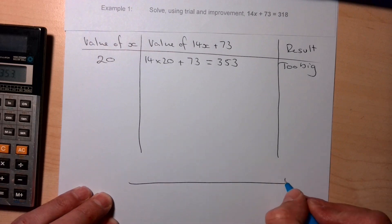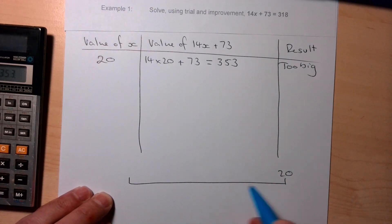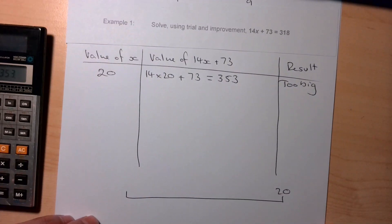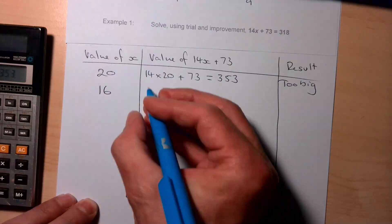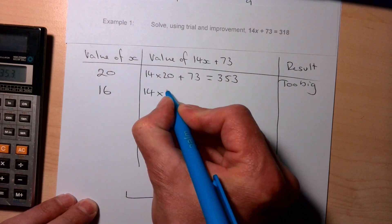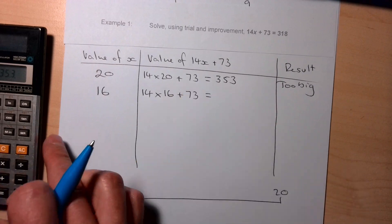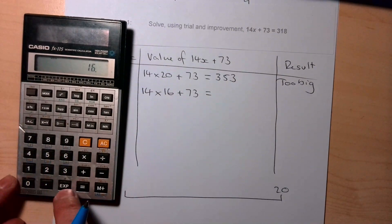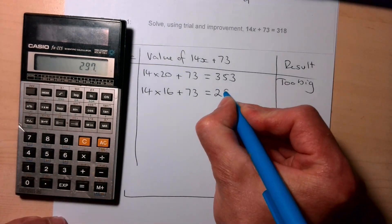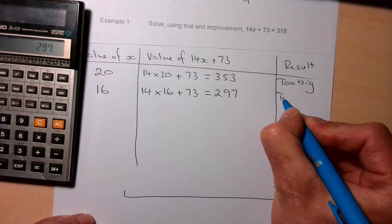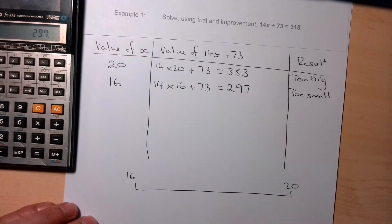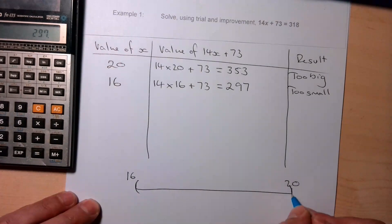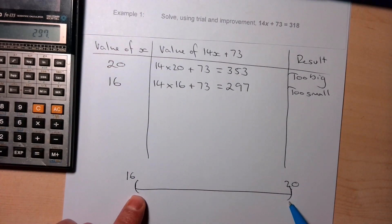I'll draw a number line at the bottom to help visualise where we're going. So 20 is too big — we put that at the upper end. We need something a bit lower, so let's try x = 16: 14 × 16 + 73 = 297. That's a bit too small, so we record 'too small'. We now know the answer lies between 16 and 20.